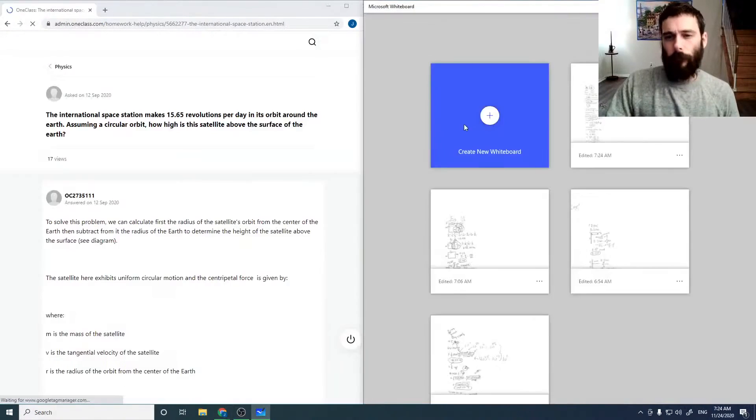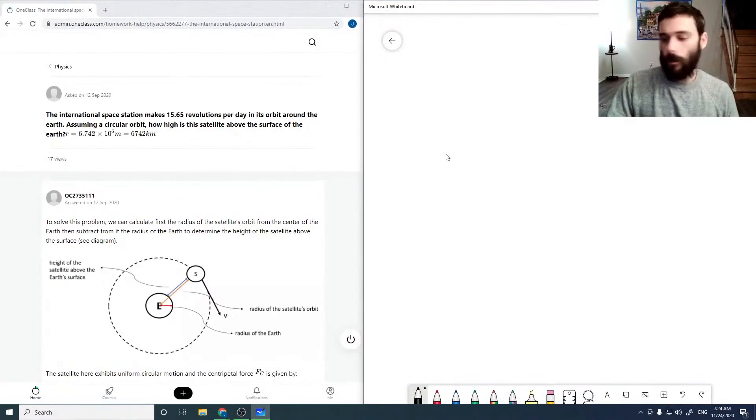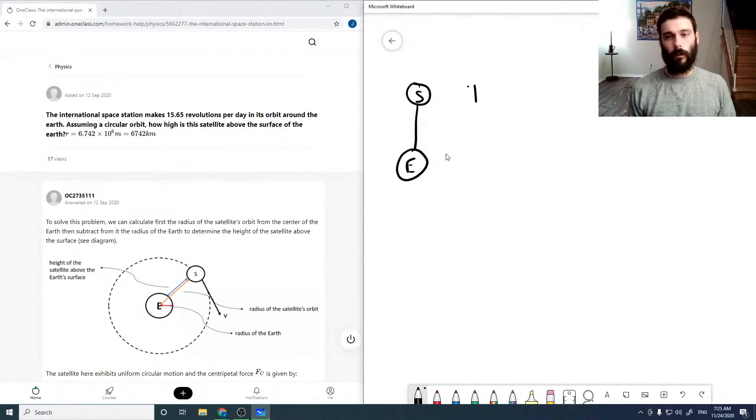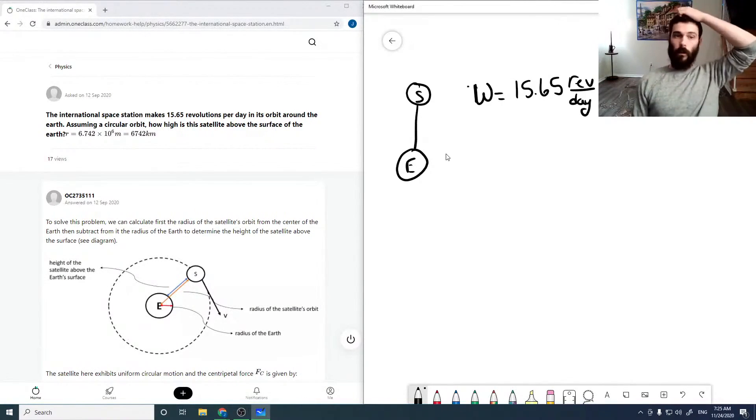It's correct besides that. Okay, so for my last one, I think this will be fairly quick. So the International Space Station orbits Earth with a frequency of 15.65 revolutions per day. Assuming a circular orbit, how high is the satellite above the surface of the Earth?